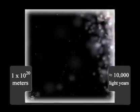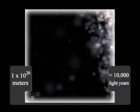Going out to 10 to the 20th meters, or 10,000 light years from the Sun, you begin to see a spiral arm of our Milky Way galaxy.